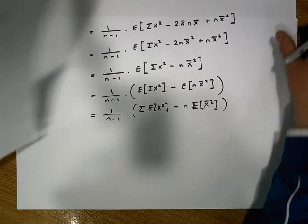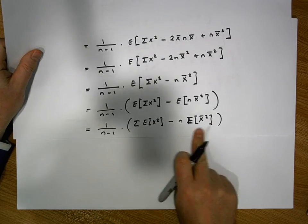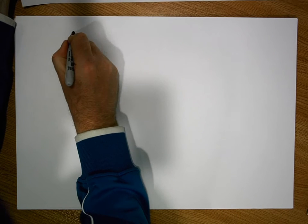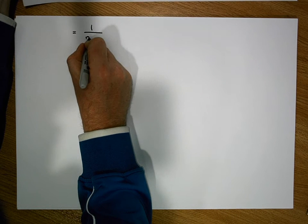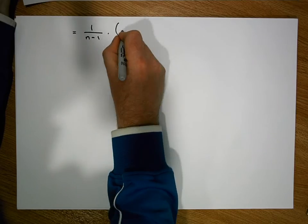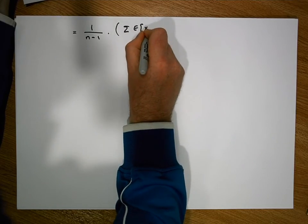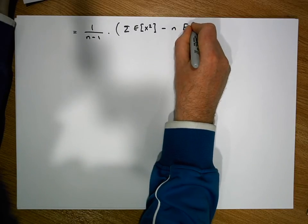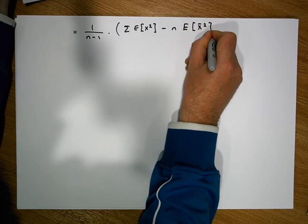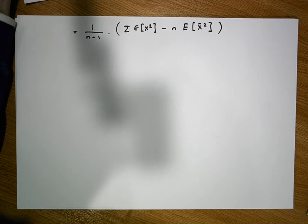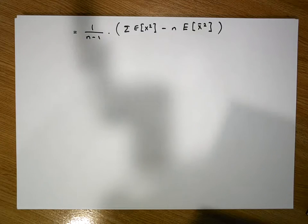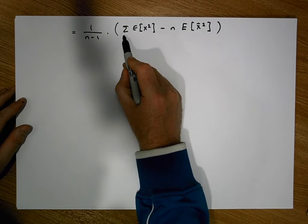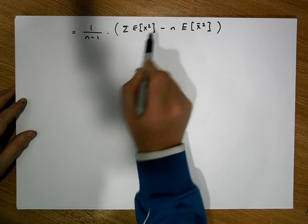Let me put this on a new sheet. The last step of the proof: we had the identity 1 over n minus 1 times the sum of the expected value of x squared, minus n times the expected value of x-bar squared. That's what we had from our previous line.